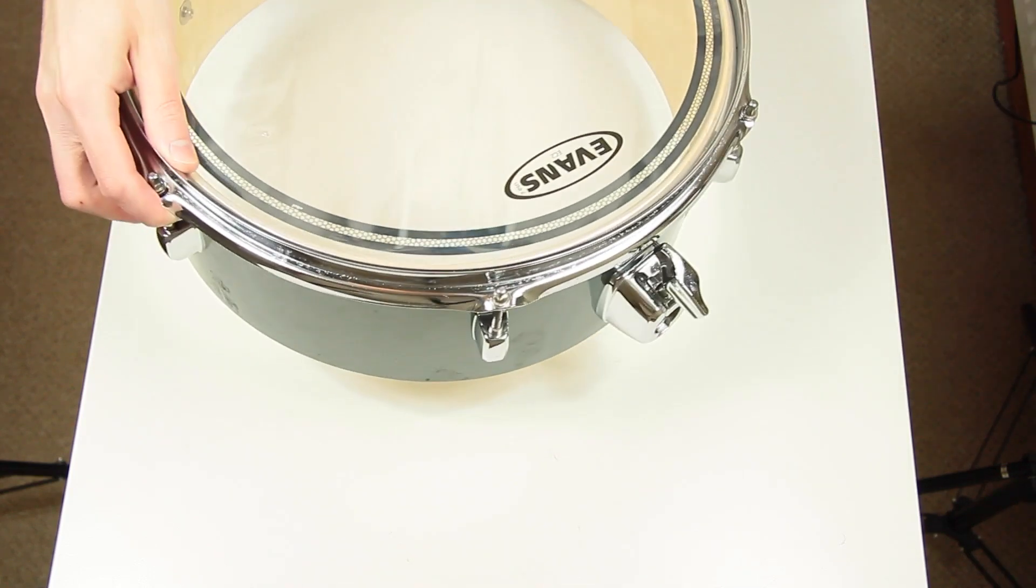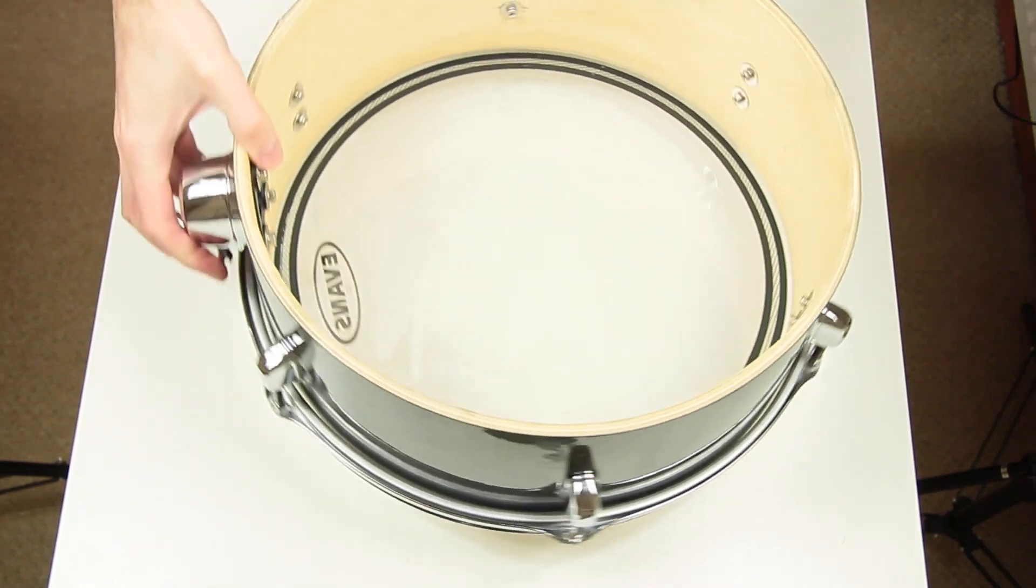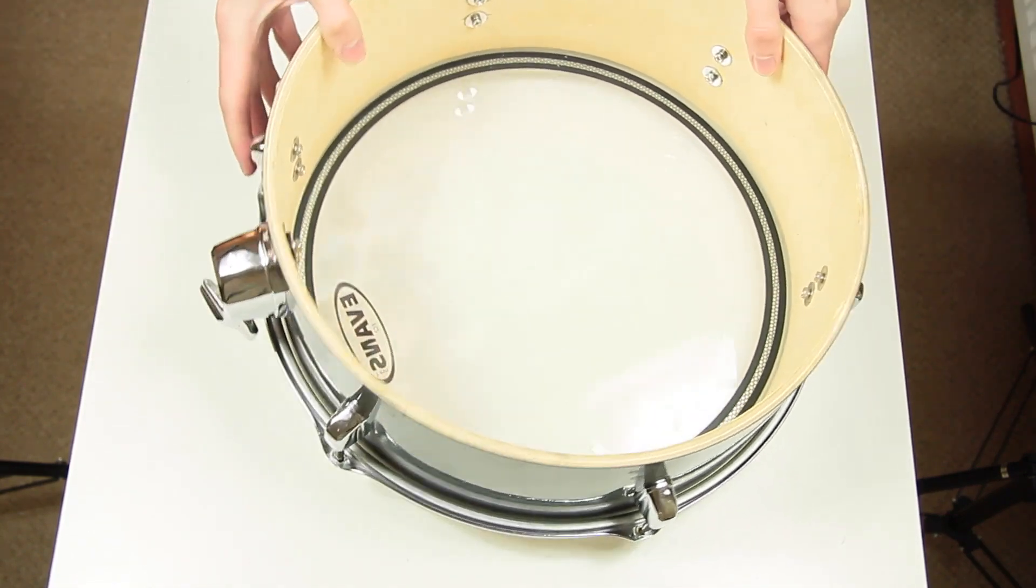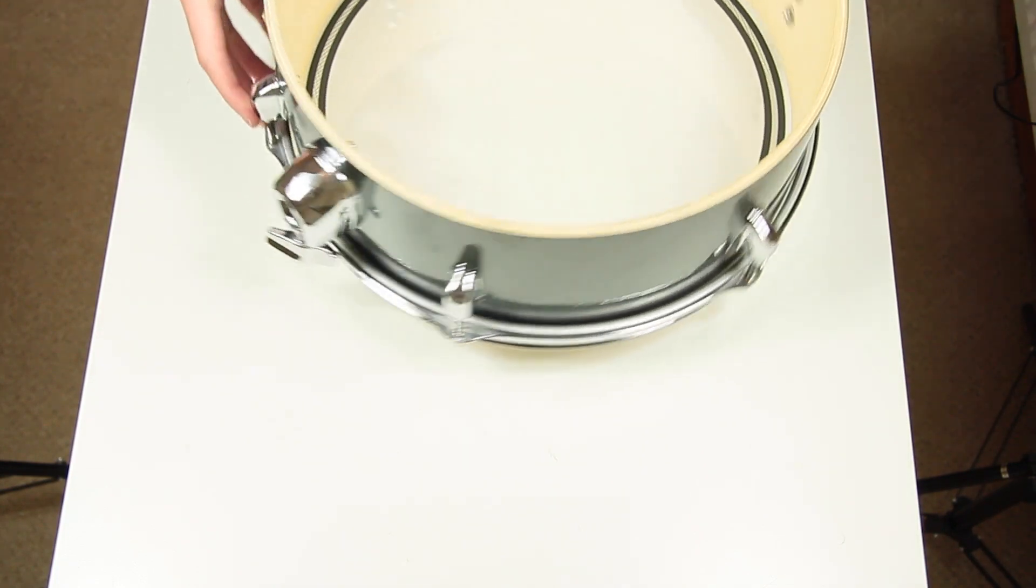Hi guys and welcome to re-drum tips. This video is about building a dual trigger mesh pad. We start out with this 14 inch Pearl Rhythm Traveler pad. It is a second-hand pad and perfect for modifications.